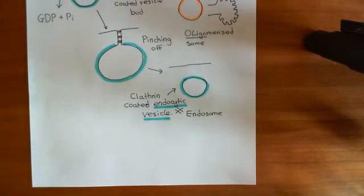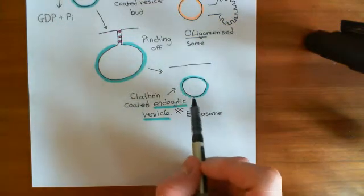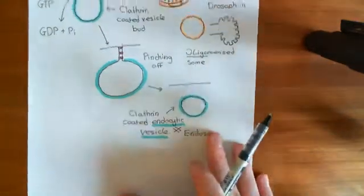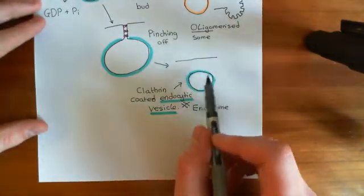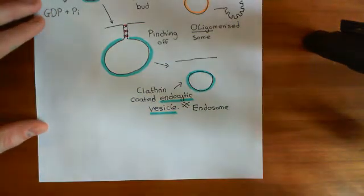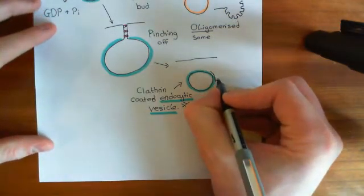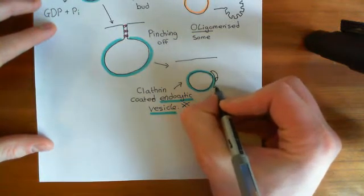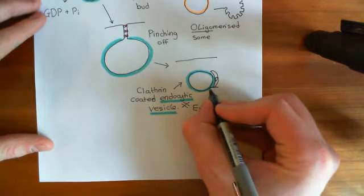What's the first thing that happens once we have actually formed a clathrin-coated endocytic vesicle? This clathrin-coated endocytic vesicle cannot do anything until it has taken its clathrin coat off. Endophyllin — the protein we saw earlier in the pinching-off process — is actually extremely important in triggering the removal of the clathrin coat. It does so by recruiting another enzyme close to the clathrin-coated endocytic vesicle.